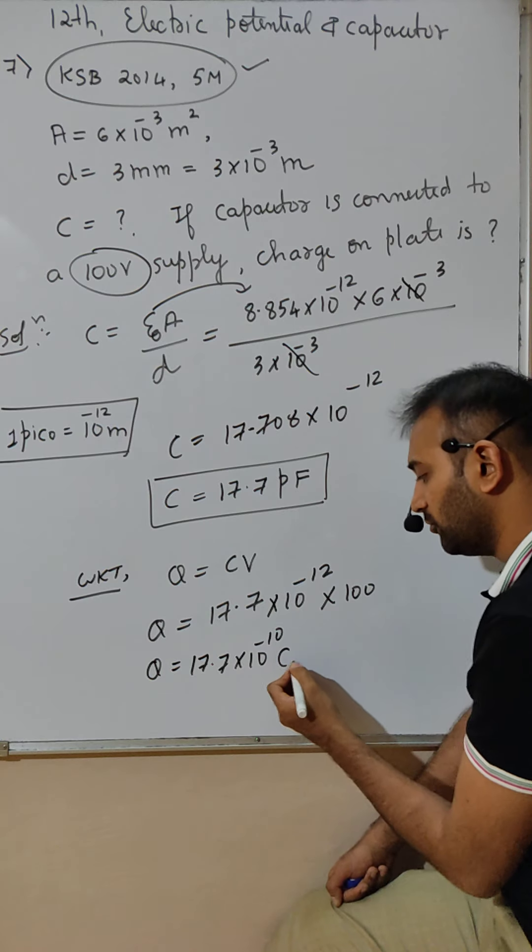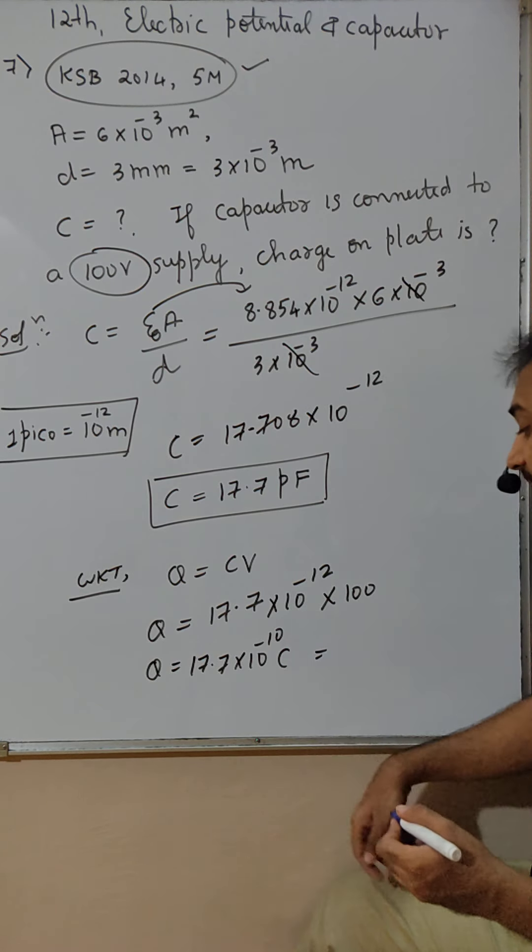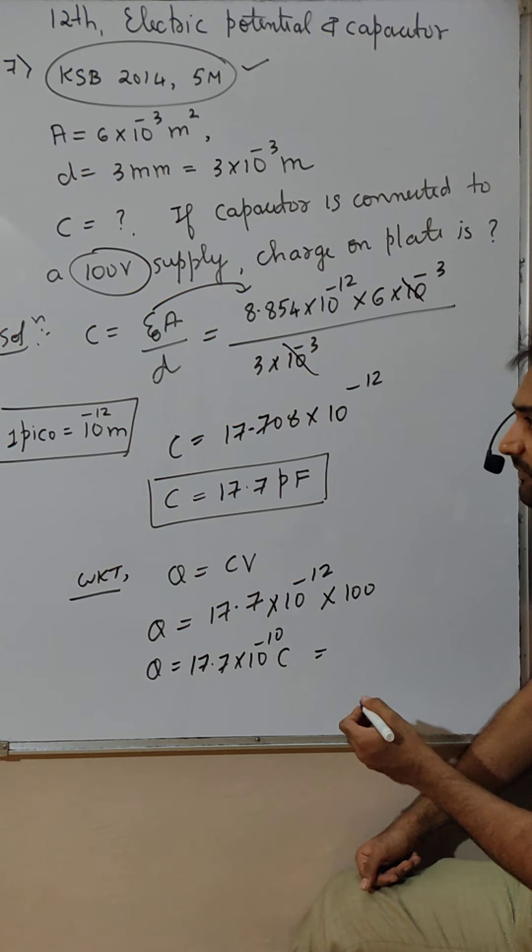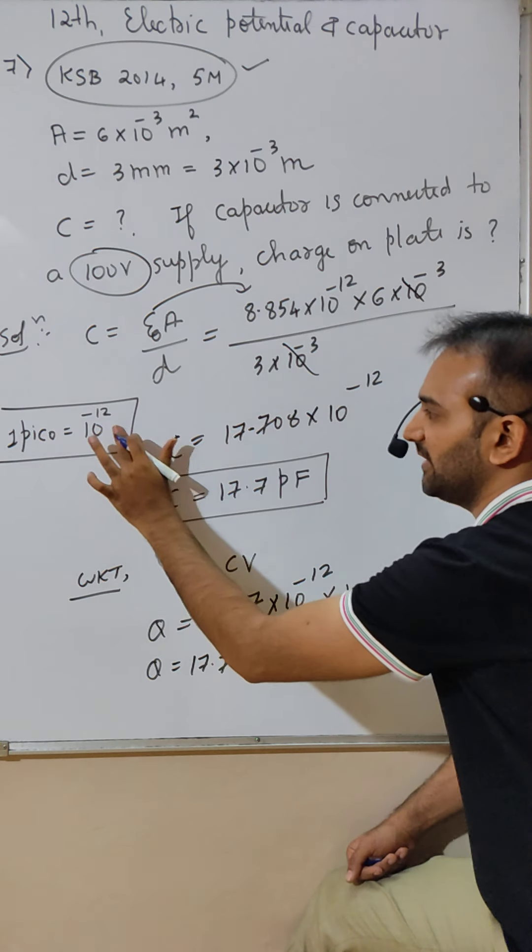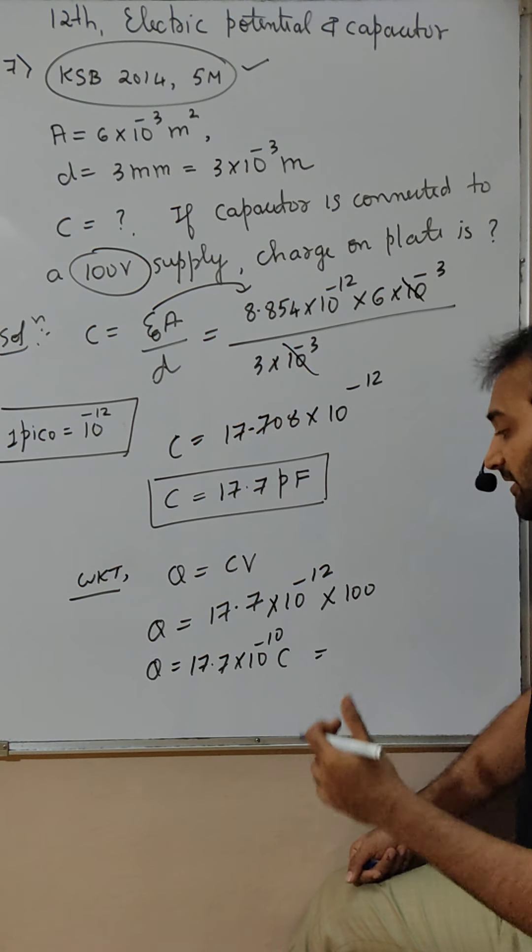Charge has to be written in coulomb. Now, 10 is not good. So I will write this, pico is 10 raised to minus 12, we have to write in nano.